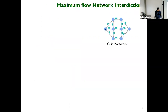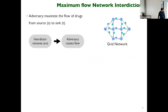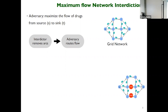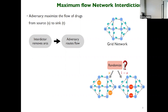So what is the maximum flow network interdiction problem? We have a grid network with a source and a sink. The adversary wants to maximize the flow from the source to the sink. There is an interdictor who commits to removing arcs at the start of the game, and then once the interdictor has committed, the adversary routes flow in the network. If you have a budget of interdicting two arcs, you can choose to remove those two arcs. An interdictor can randomize — choosing with probability U the left plan and one minus U the right plan. The objective is: how should the interdictor randomize among the feasible interdiction plans?